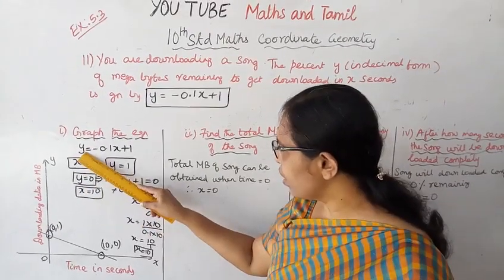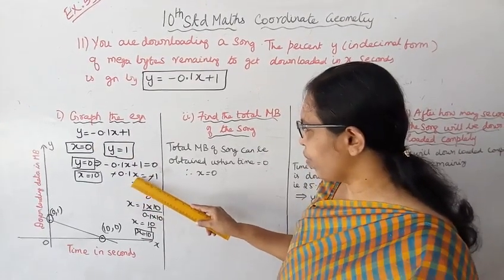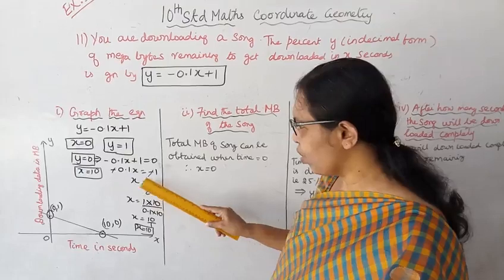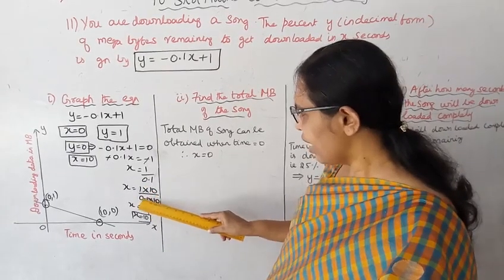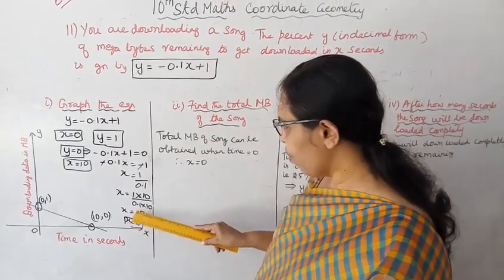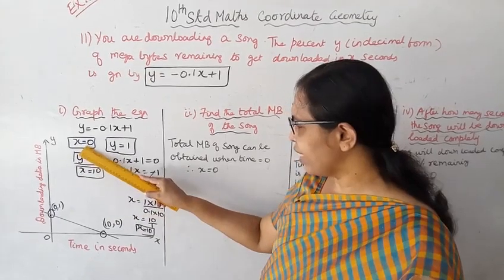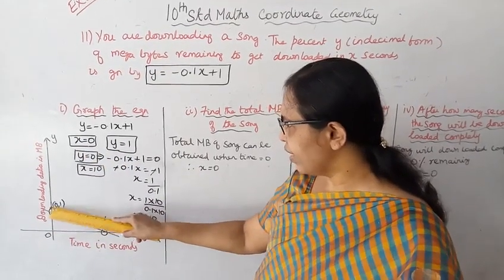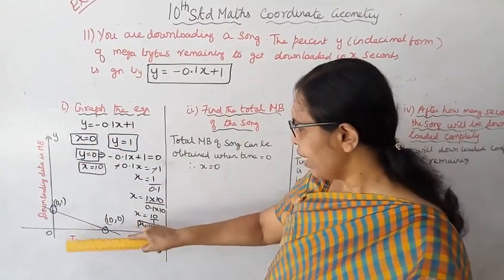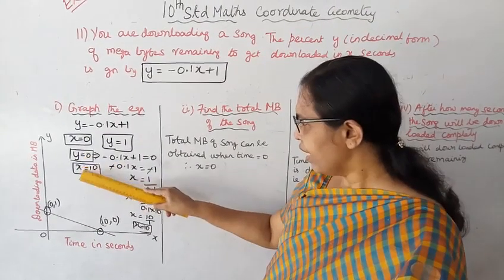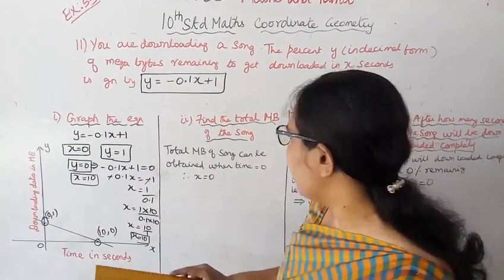When x equal to 0, we get y equal to 1. And when y equal to 0, minus 0.1x plus 1 equal to 0, so minus 0.1x equal to minus 1, minus minus cancels, x equal to 1 by 0.1. Since it's a decimal, multiply by 10: 0.1 into 10 is 1, so 10 by 1, x equal to 10. So when y equal to 0, x equal to 10. First point: (0, 1). The y-axis is downloading data in MB, x-axis is time in seconds. When x is 10, y is 0. The graph is now drawn.